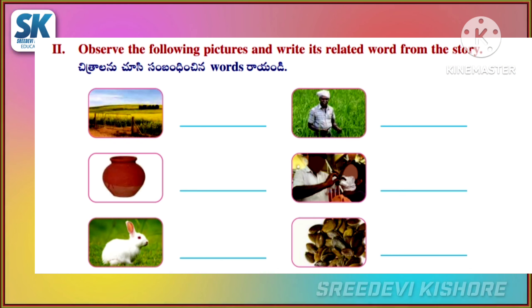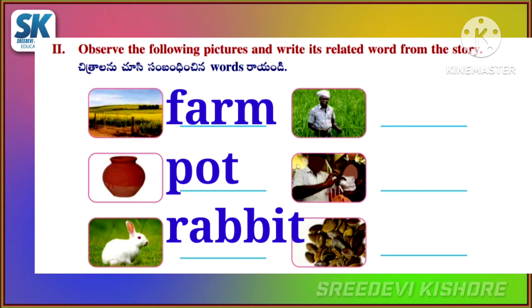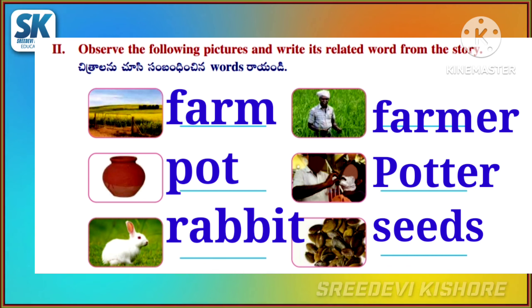Observe the following pictures and write its related words from the story. Form, pot, rabbit. Former, potter, seeds.